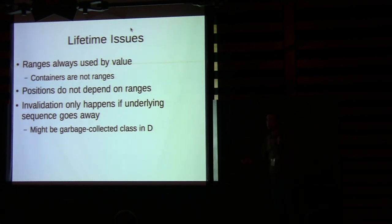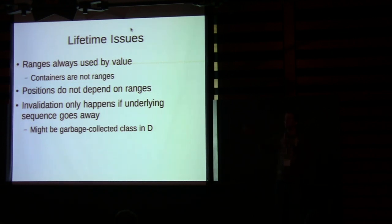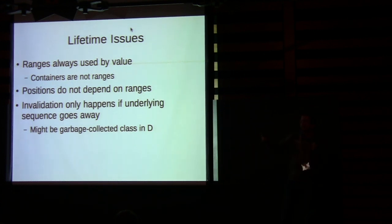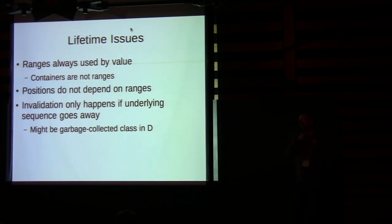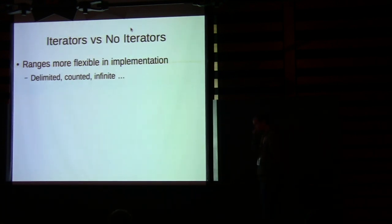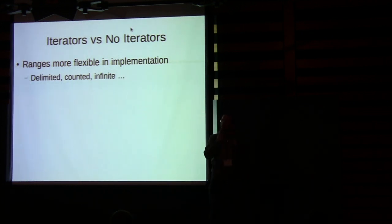What if the container gets changed? If a vector reallocates, the range is likely dead. You could implement the vector range with a reference to the vector plus an index, but then it gets invalidated if the vector is moved. Alternatively, you could implement it with iterators, which have different invalidation behavior. It's a tradeoff. There's an interesting invalidation issue I discovered, which I'll cover shortly.